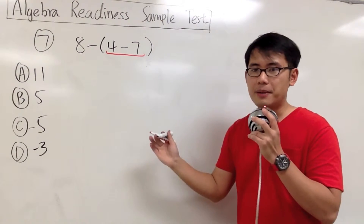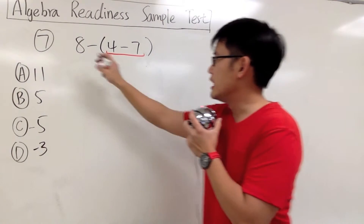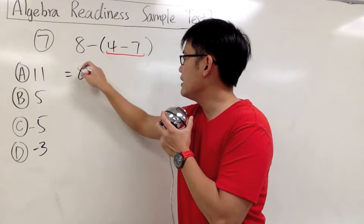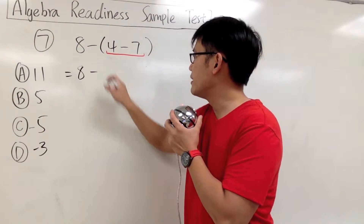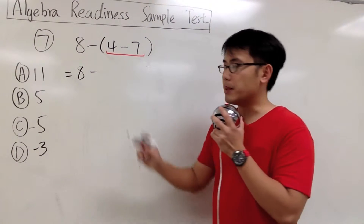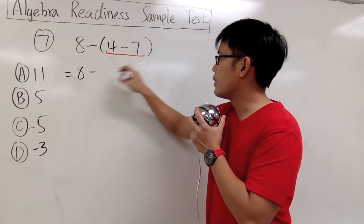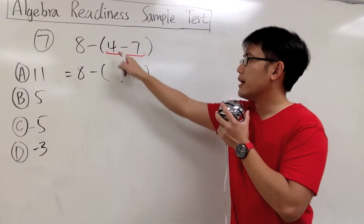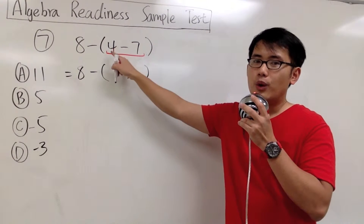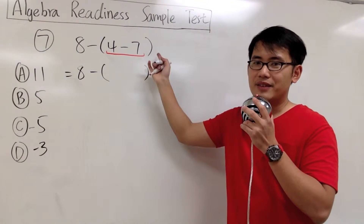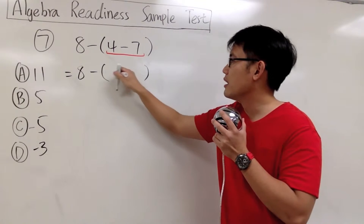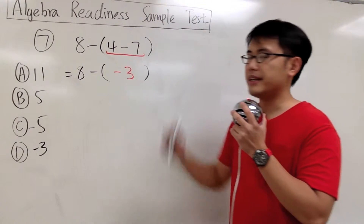Everything else will stay the same. So let me just bring it down — the 8, the minus — and we will also keep the parentheses right here. And we have to ask ourselves, what's 4 minus 7? The answer to that will be negative 3.